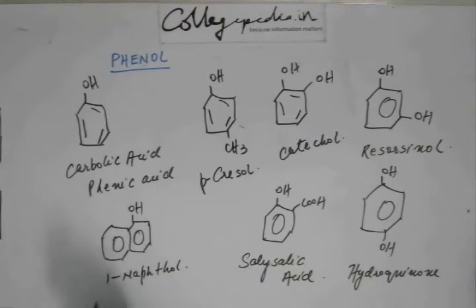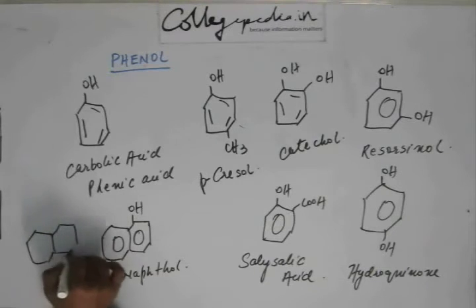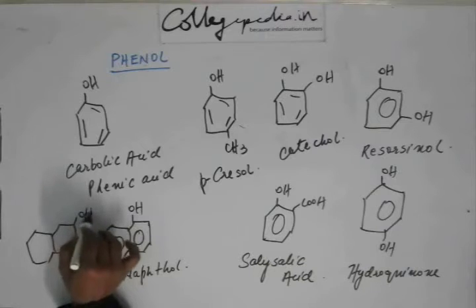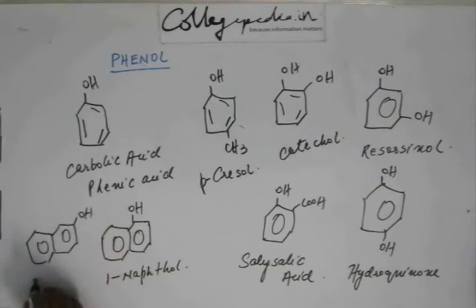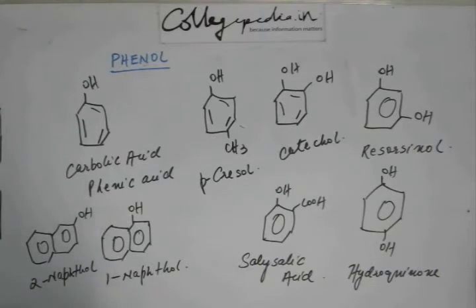This is naphthalene. If we have a hydroxy group at this position, this is called 1-naphthenol. If that hydroxy group is at beta position, this is called 2-naphthenol. So these are common, very common and very important phenols.